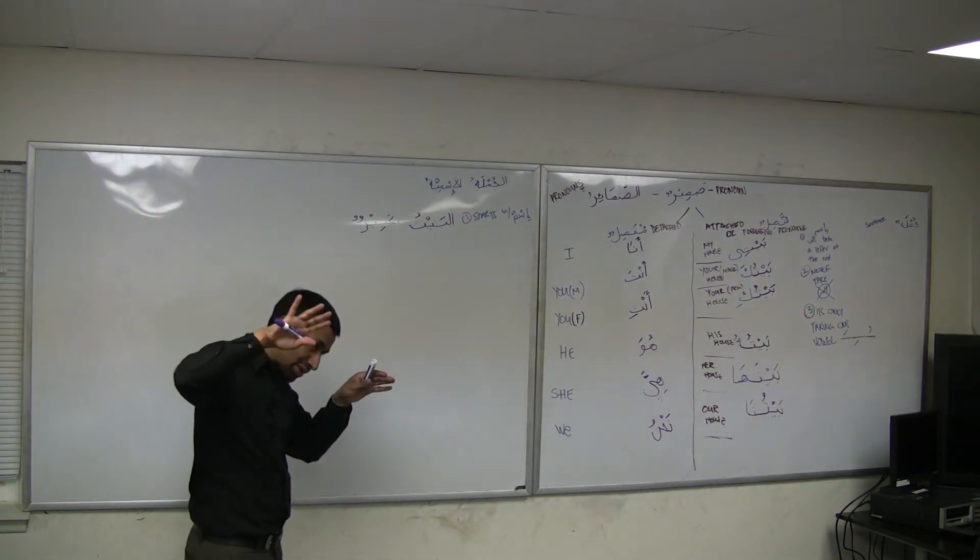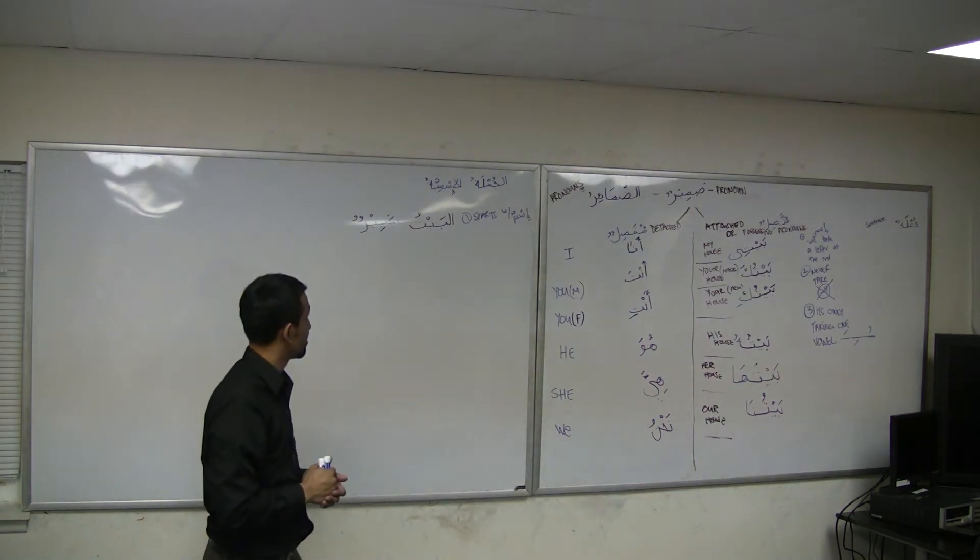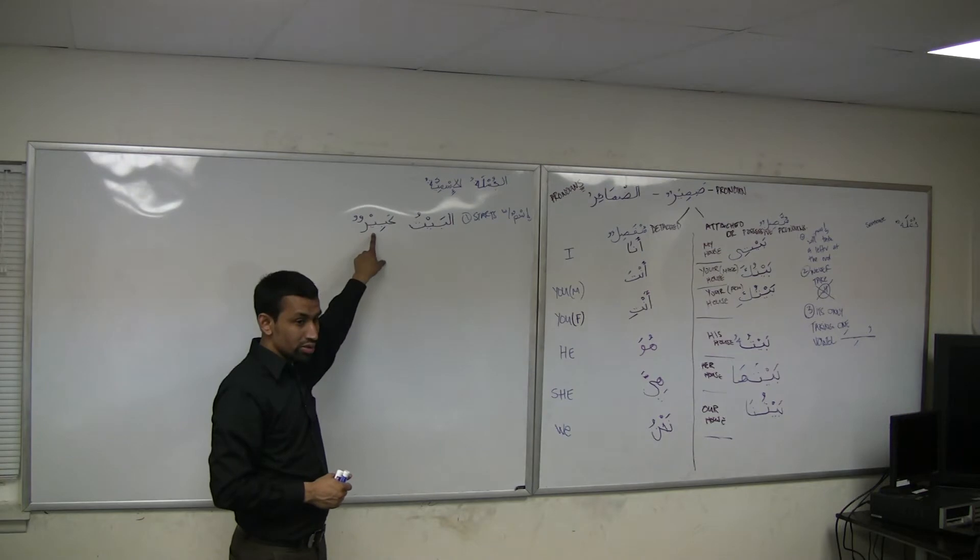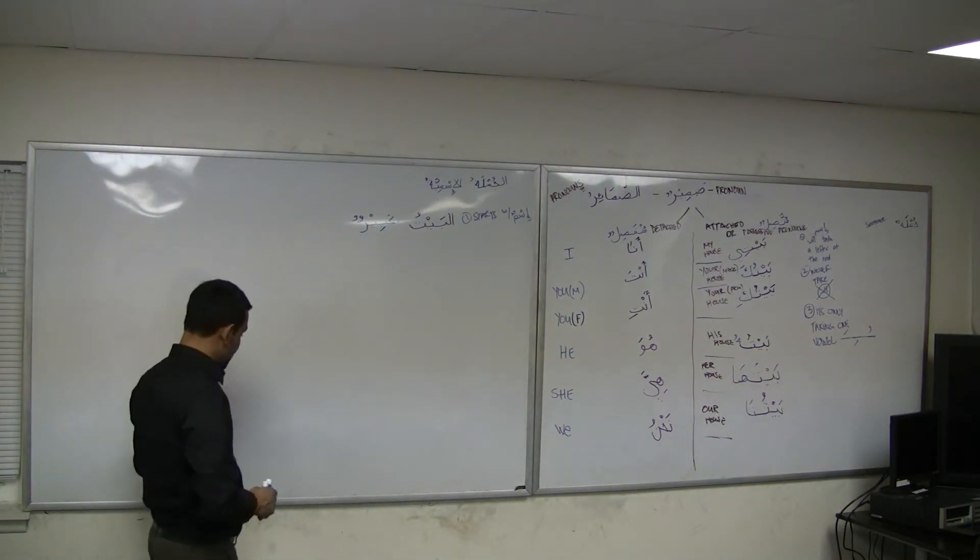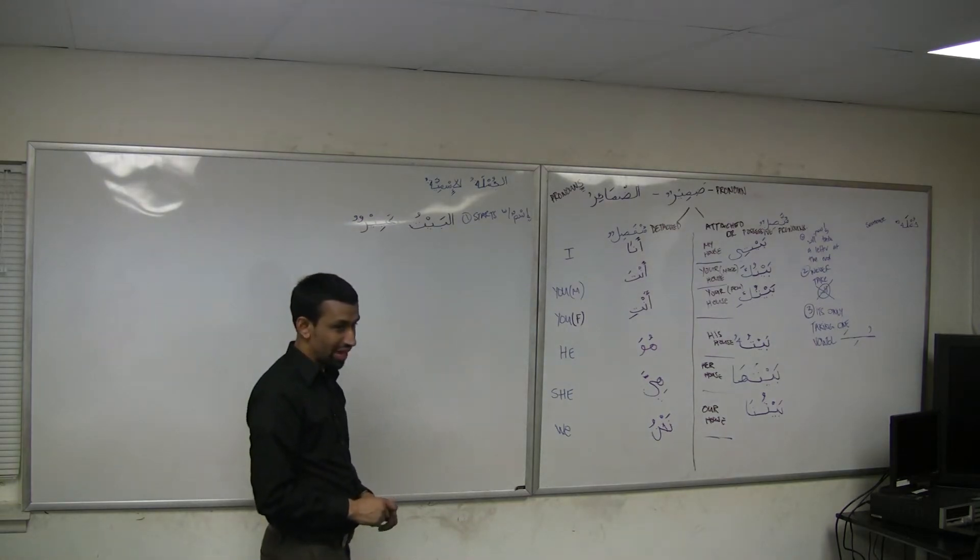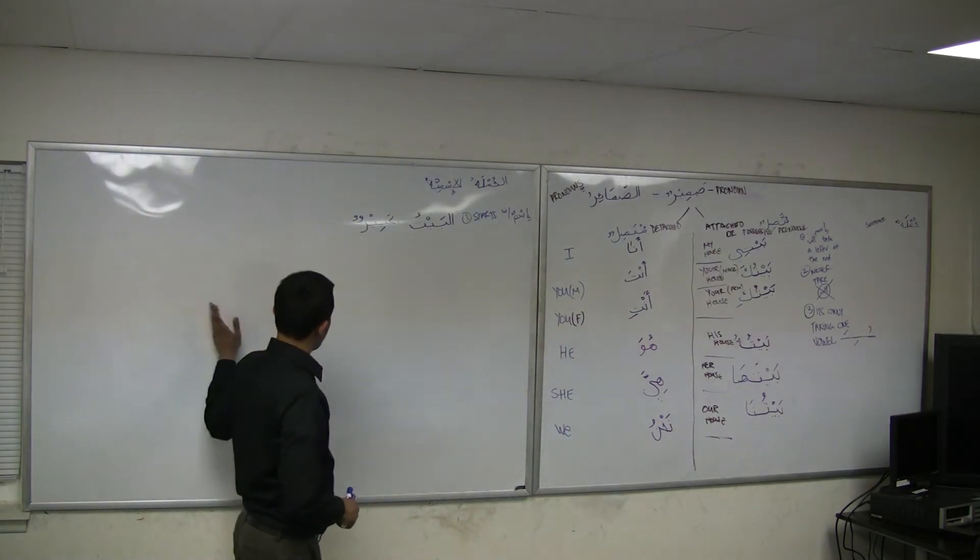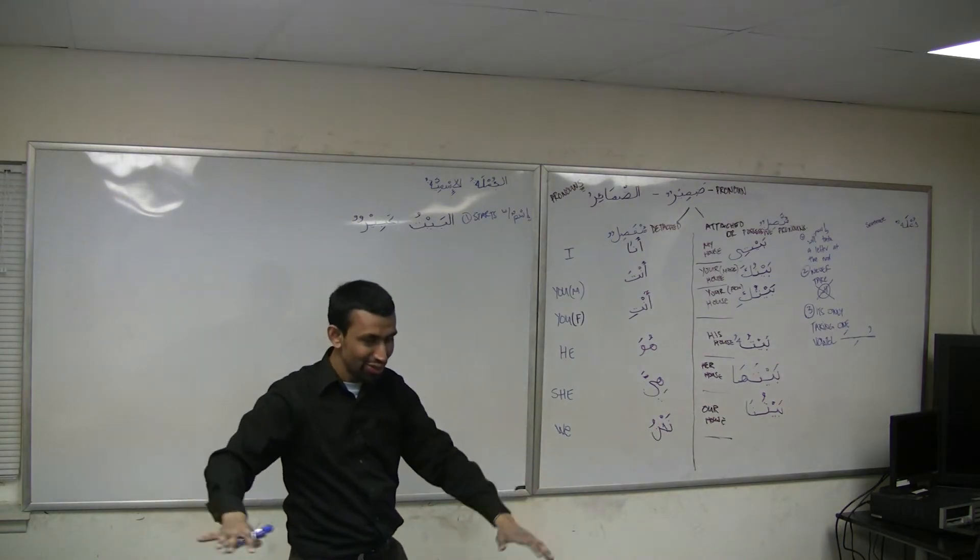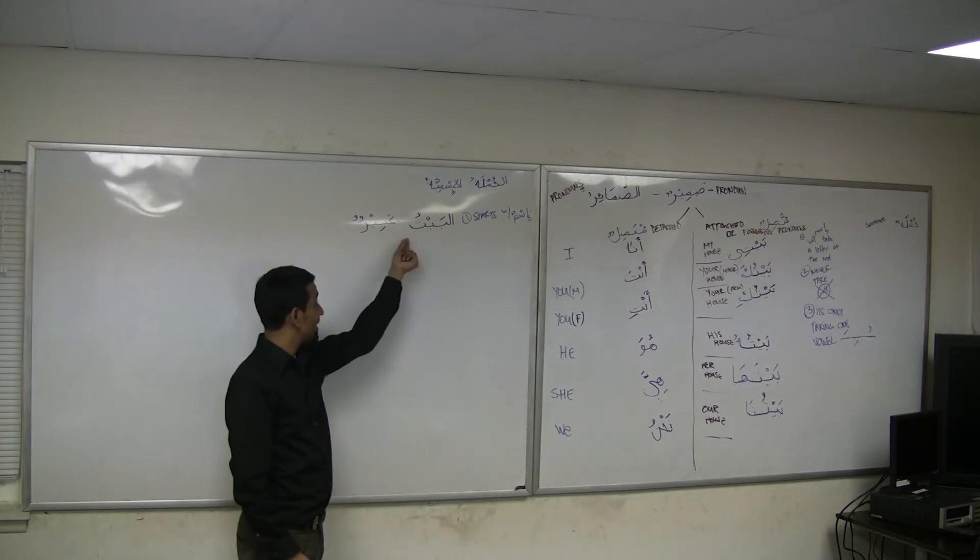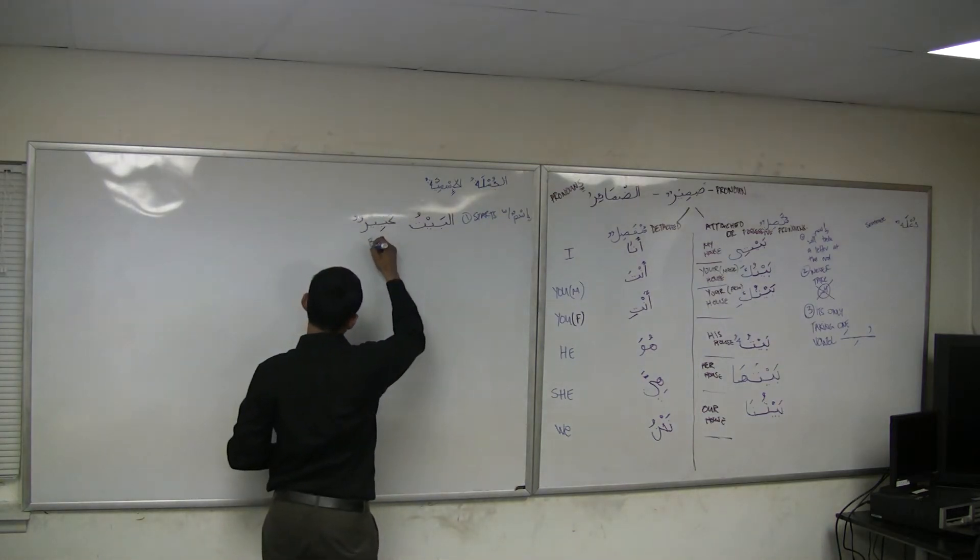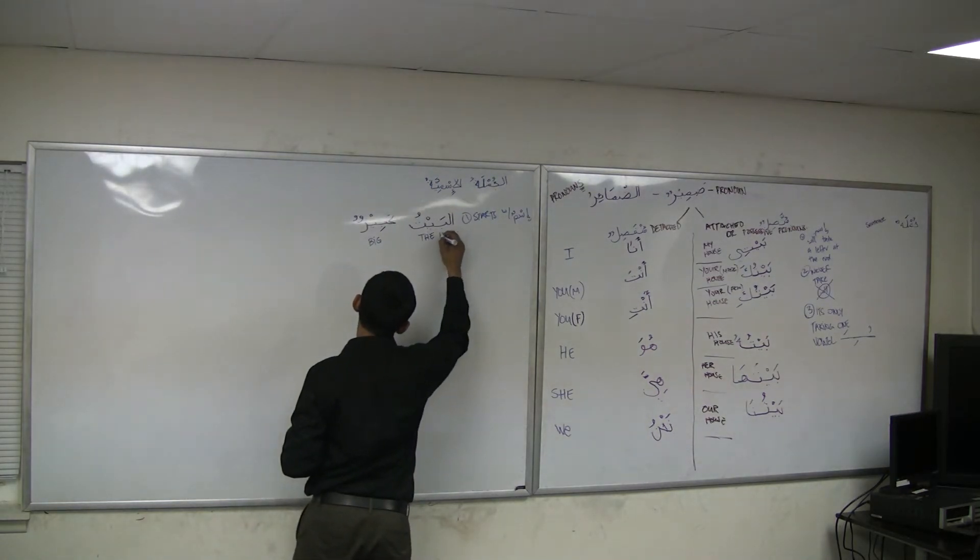Al-baytu kabirun. The tanween at the end - is it attached? Remember it will take a letter from the right, it will not take a letter coming from the left. That's right, it gets a damma. Alright, al-baytu kabirun. This is our jumla ismiya. You guys have just made an announcement now.